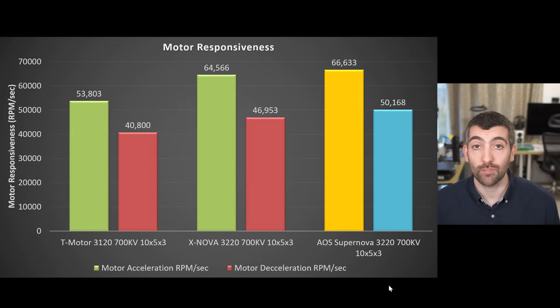Looking now at motor responsiveness and it's a similar story to the previous graphs we've already looked at with the T-motor performing the worst with an acceleration of 53,000, 54,000 rpm per second and a deceleration of 41,000 rpm per second. The Xnova did significantly better with an acceleration of 64,500 rpm per second and a deceleration of 47,000 rpm per second but the improved magnetic design of the Supernova 3220 allows it to exceed those other two motors and deliver an acceleration of 66,500 rpm per second and a deceleration of above 50,000 rpm per second which is the most responsive 3220 motor that I've tested.